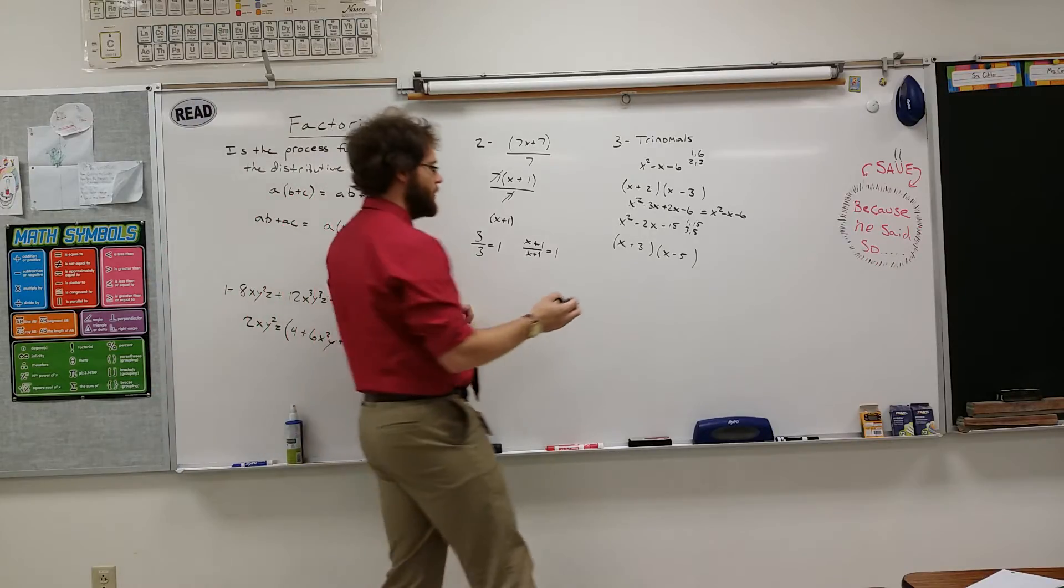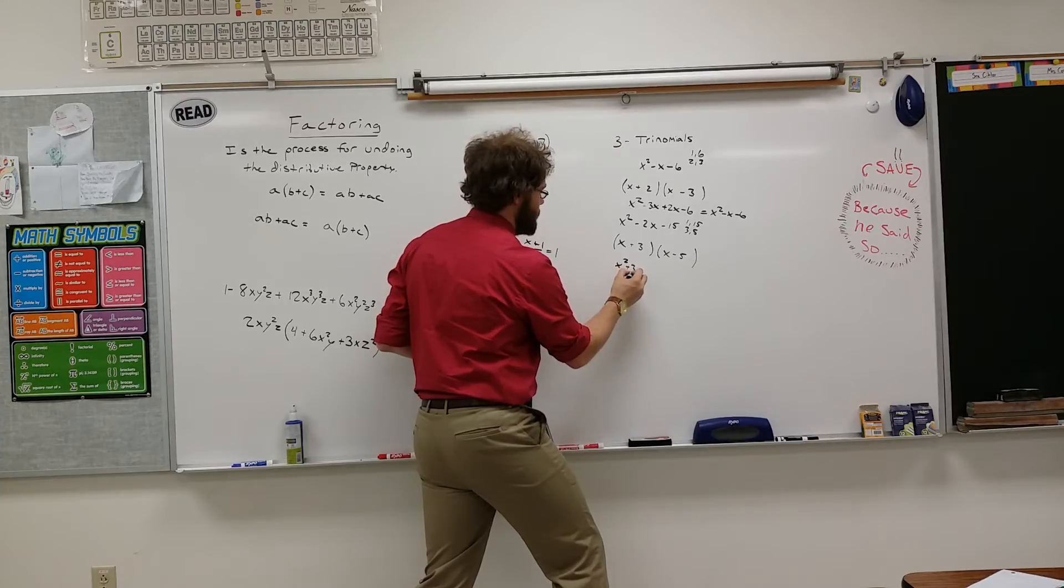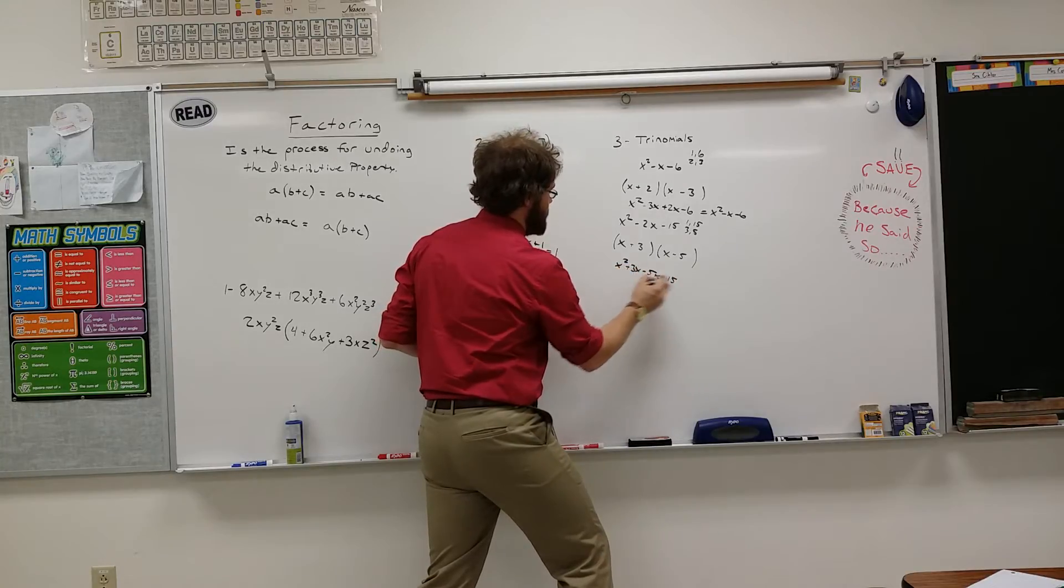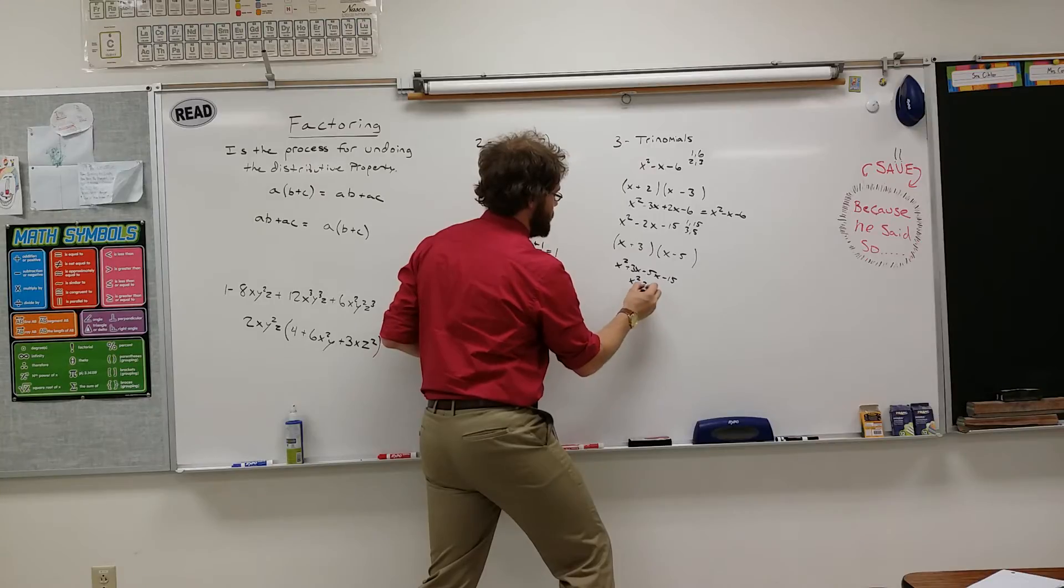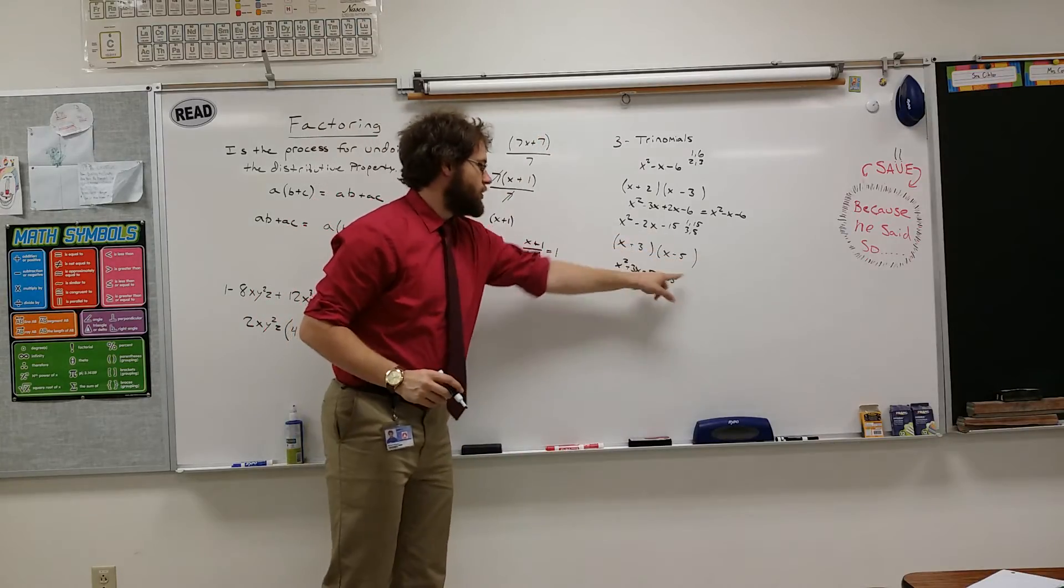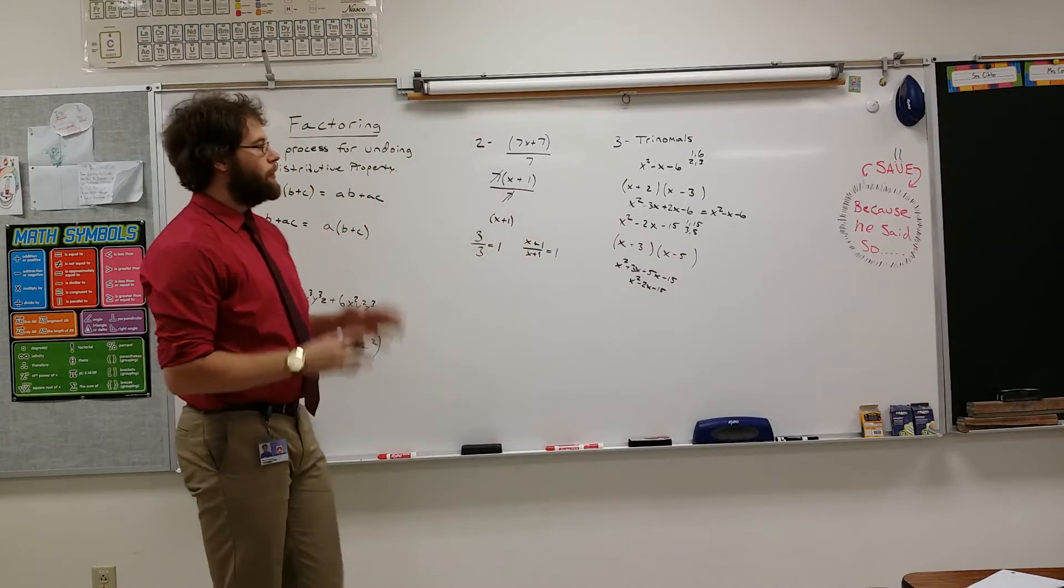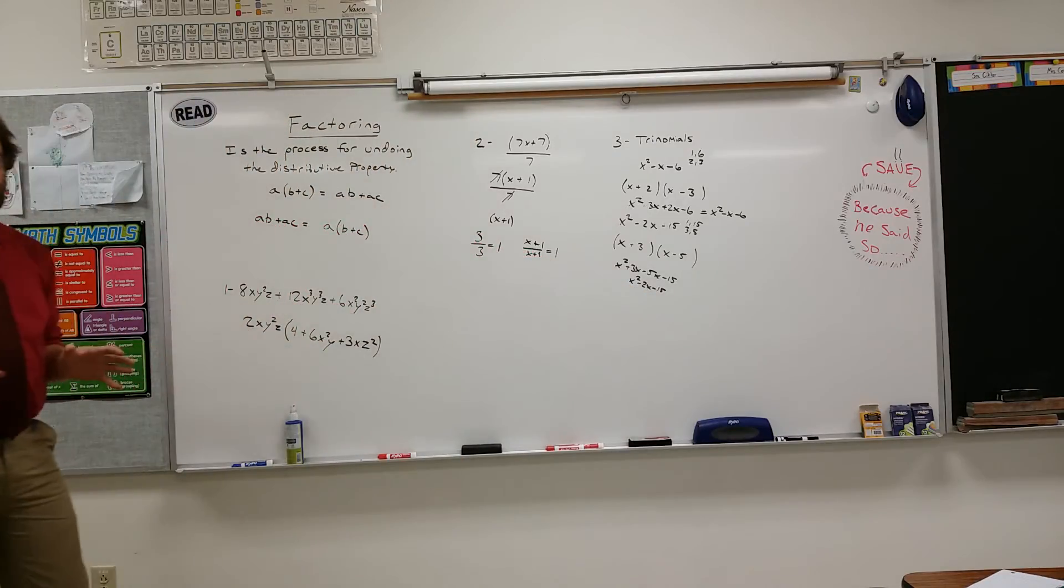And then, I could FOIL really quickly to make sure that I'm right. X times X is X squared plus 3X minus 5X minus 15, which is X squared minus 2X minus 15. So, as you can see, these factors are correct because they do get me back to my original trinomial.